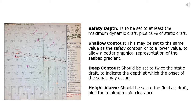Safety depth is to be set to at least the maximum dynamic draft plus 10% of static draft. Shallow contour may be set to the same value as the safety contour, or to a lower value to allow a better graphical representation of the seabed gradient. Deep contour should be set to twice the static draft to indicate the depth at which the onset of squat may occur. Height alarm should be set to the final air draft plus the minimum safe clearance.